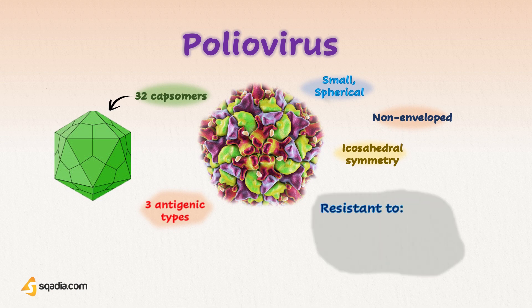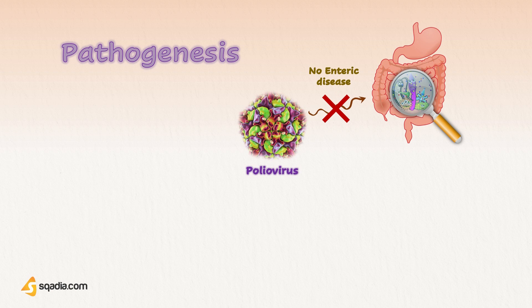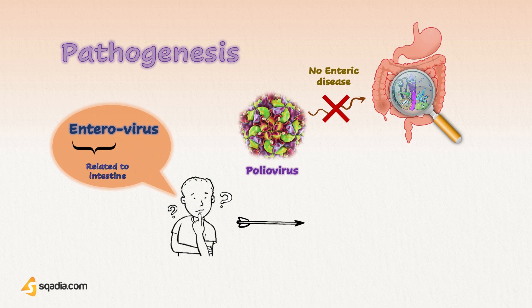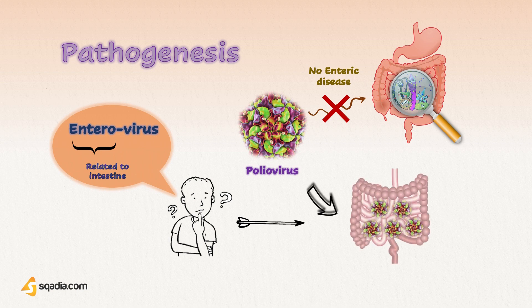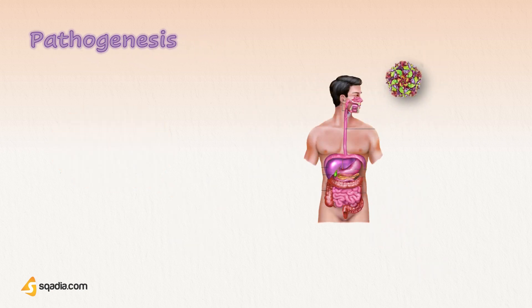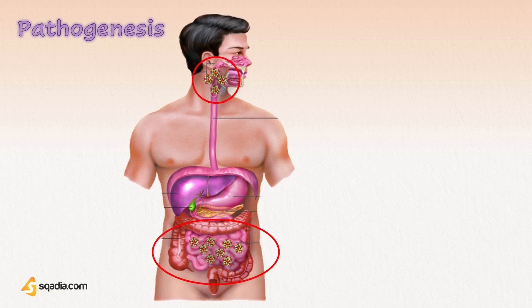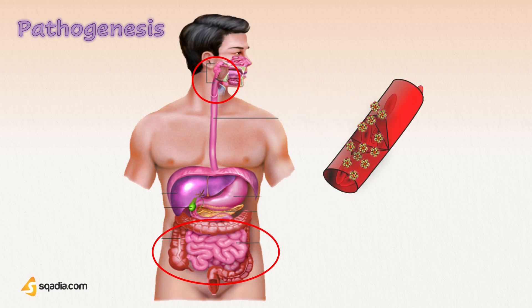Polioviruses are resistant to low pH and also resistant to various proteolytic enzymes, making them difficult to destroy. Despite being a member of Enterovirus, polioviruses do not produce an enteric disease or a gastrointestinal disease. They are so named because the alimentary canal is their predominant site of replication. Man is the only natural reservoir, and the portal of entry is the mouth or oropharynx. Following ingestion, poliovirus multiplies first in the pharynx or small intestine, infects the mucosal tissue, and enters blood, also gaining access to reticuloendothelial cells.